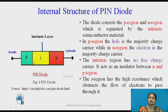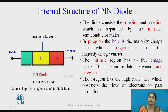The diode consists of a P-type region and an N-type region, which are separated by an intrinsic semiconducting material. In the P-type region, holes act as majority carriers, while in the N-type region, electrons act as majority carriers. The intrinsic layer has no free charges, so it acts as an insulator between the N and P regions. The I-region has a high resistance, which obstructs the flow of electrons between the P-type and N-type regions.